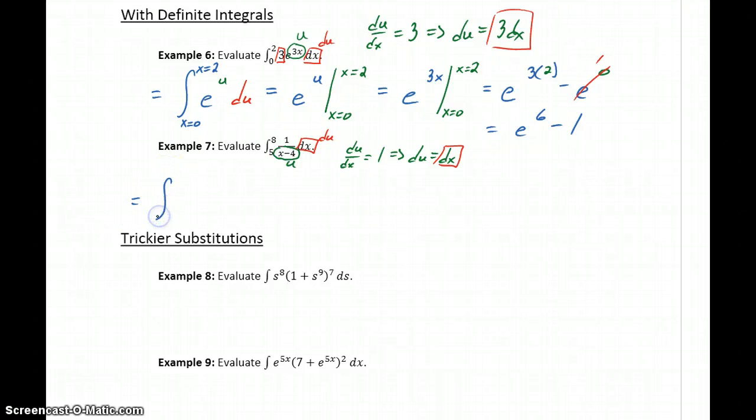So this is going to become the integral of 1 over u du, and we're integrating from x equals 5 to x equals 8. So again, we just want that kind of note to ourselves to make sure we don't evaluate this by plugging values in for u. We'll need to get it back in terms of x before we make those substitutions.